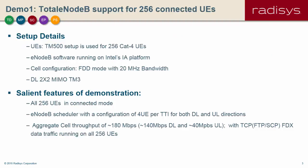Demonstration part 1, setup details. I'm going to use TM500 UE simulator for 256 users. Our E-Node-B will be running on Intel's IA platform. We have configured our E-Node-B with a single cell with 20 MHz bandwidth of FDD.